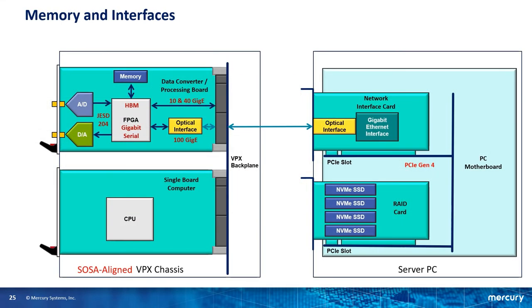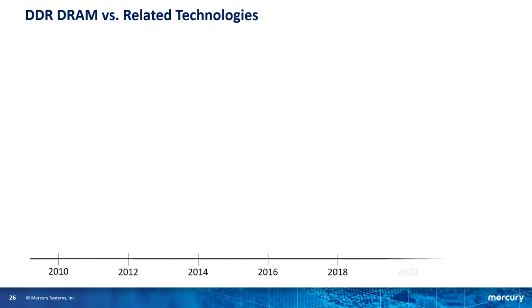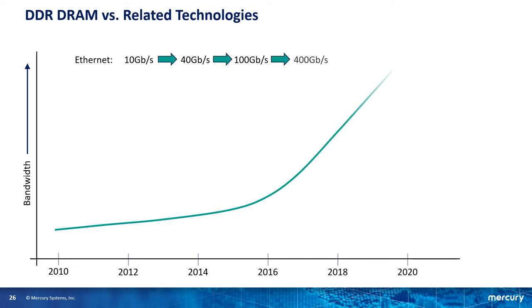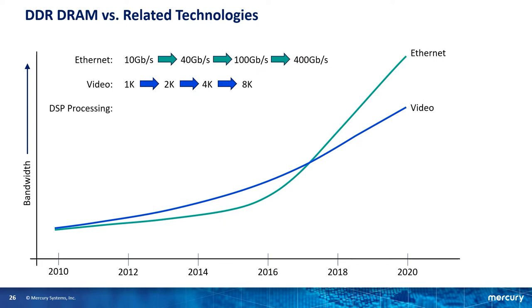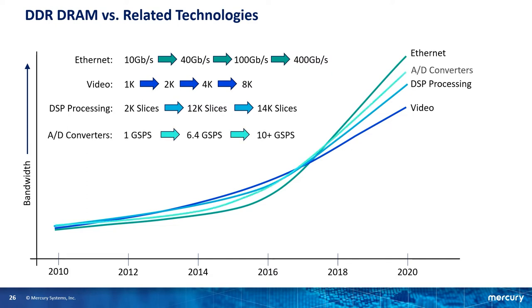Going back to our block diagram, we now have data streaming into the FPGA, so let's look at the options for memory. I'll plot several technologies over a 10-year period against increased bandwidth requirements. Starting with Ethernet, we were at 10 gigabits per second 10 years ago, then moved to 40, and now we're at 100 and moving towards 400 gigabits per second. For video, 10 years ago we were at 1K for high def, and now we've moved to 2K, 4K, and 8K resolution. For DSP processors on FPGAs, we went from 2,000 DSP slices in Virtex 6 to 12,000 in UltraScale Plus and 14,000 on Versal. And A to D converters have gone from 1 gigasample per second up to 10 gigasamples per second today. All of these technologies require memory — either for buffering, storage, or as a processing resource.